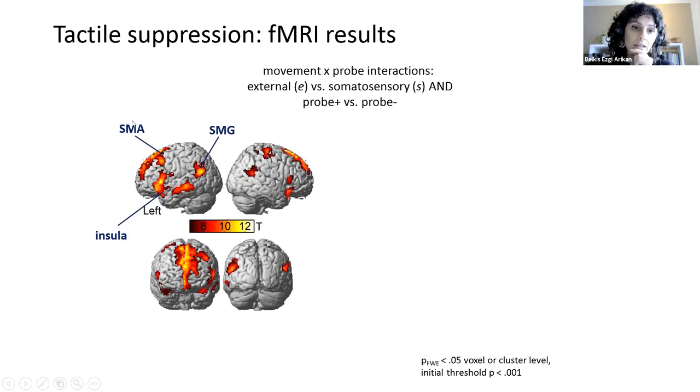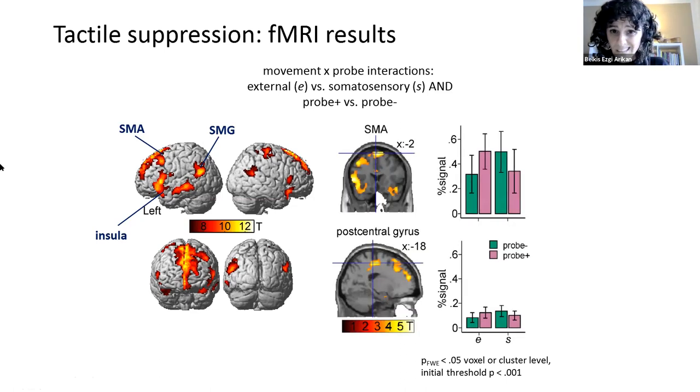So we see that the activation in the SMA, the supramarginal gyrus, insula is modulated by whether the movement is somatosensory, whether the goal target is somatosensory or external, and also whether a probe was presented or not. So this you can see more clearly by just looking at the activations.